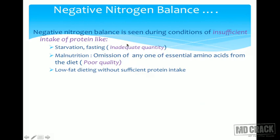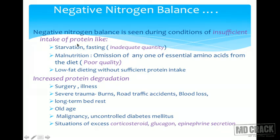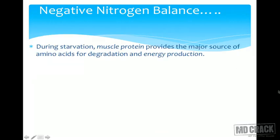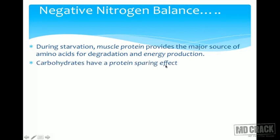Negative nitrogen balance is seen during insufficient protein intake — starvation, fasting, malnutrition, omission of any one essential amino acid from the diet (poor quality protein), and low-fat dieting without sufficient protein. It is also caused by increased protein degradation — surgery, illness, severe trauma, burns, road traffic accidents, blood loss, long-term bed rest, old age, malignancy, uncontrolled diabetes mellitus, and excess corticosteroids, glucagon, or epinephrine.